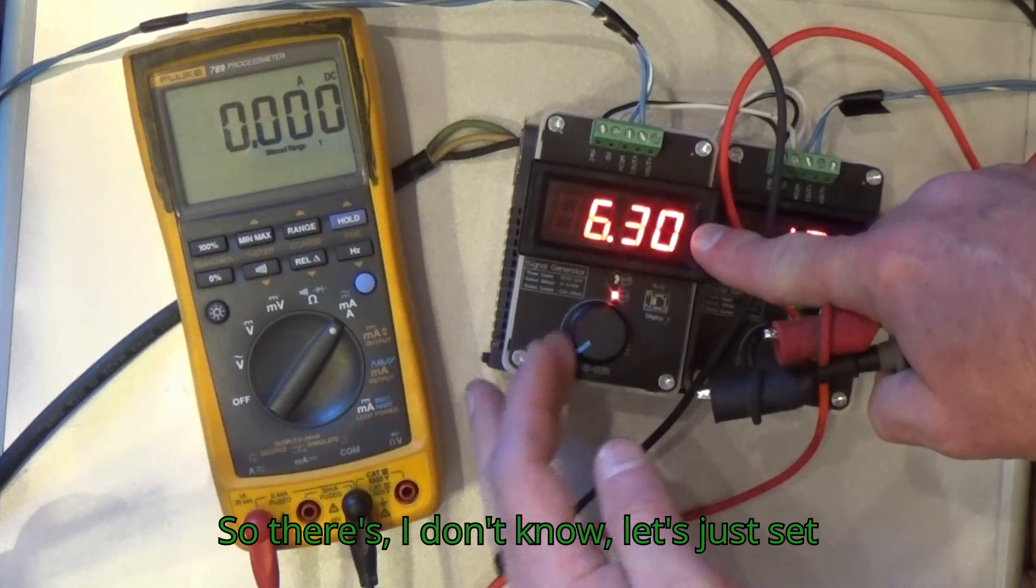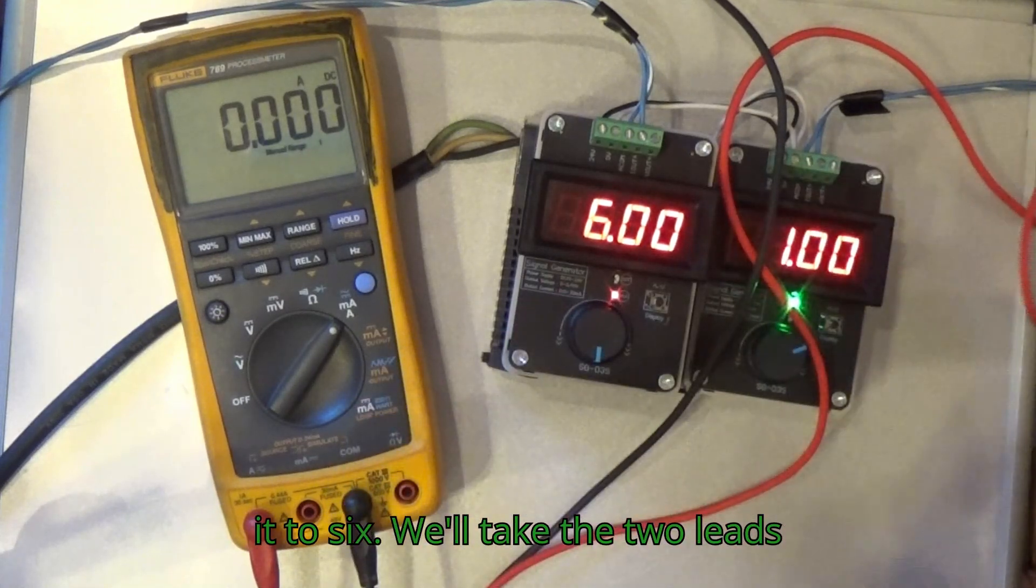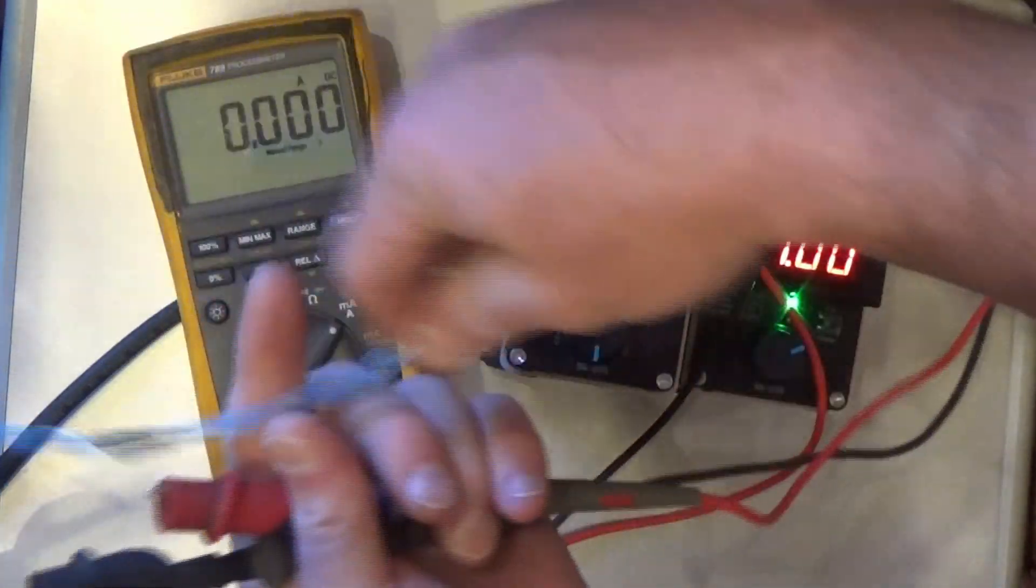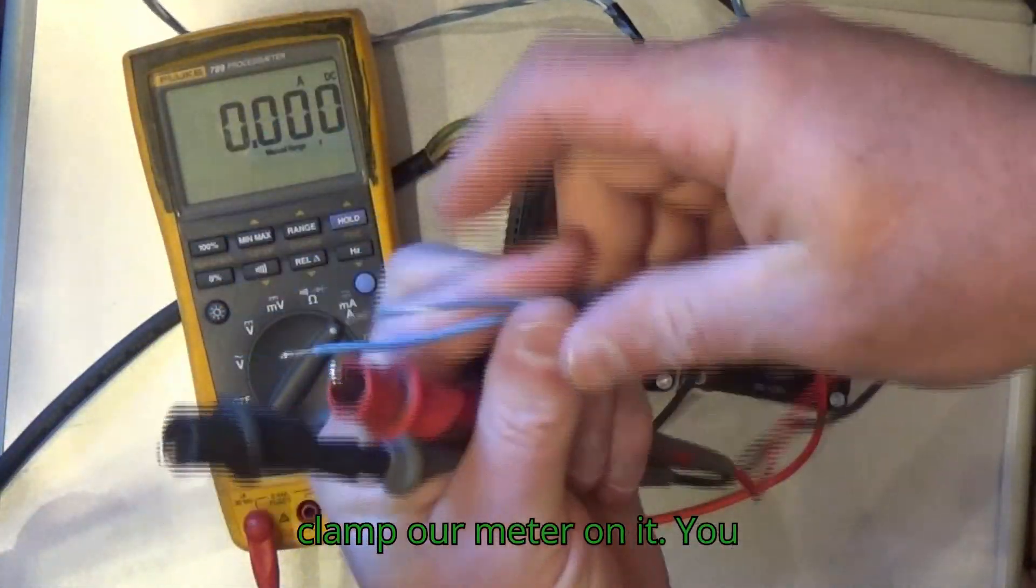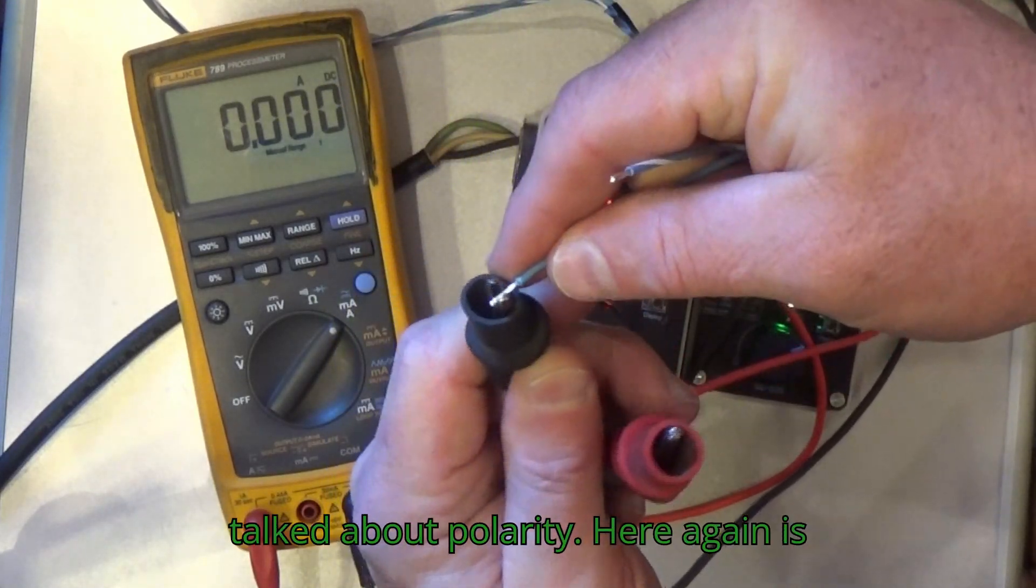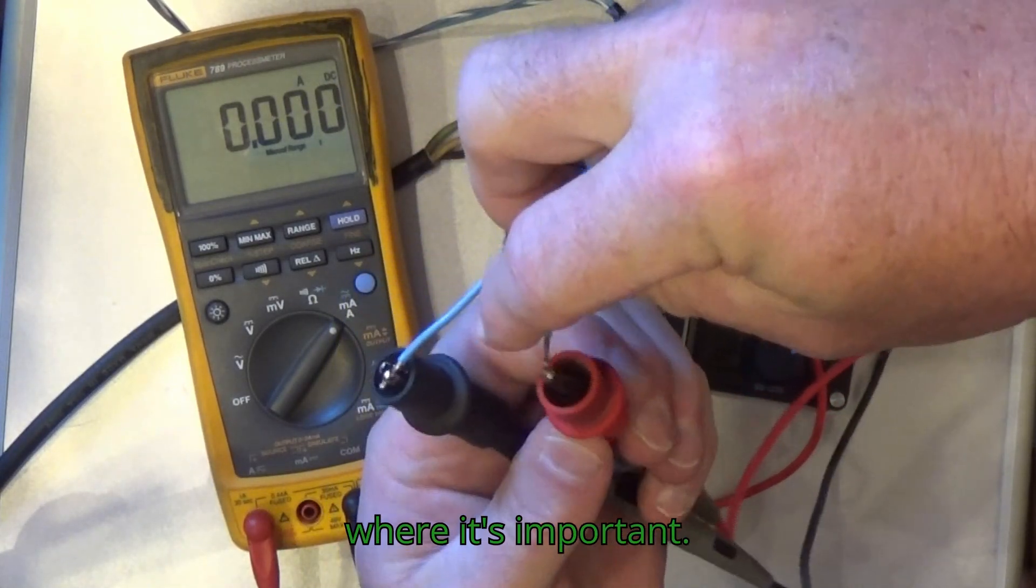So let's just set it to six. We'll take the two leads that goes to that, clamp our meter on it. You remember from the previous video, we talked about polarity. Here again is where it's important.